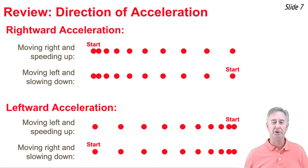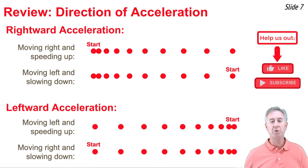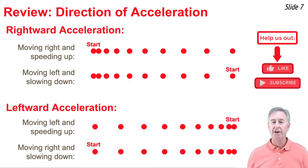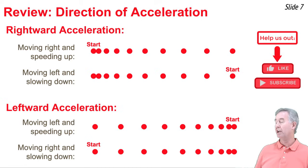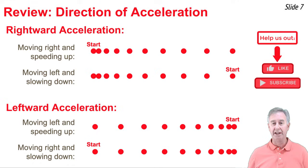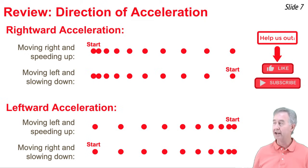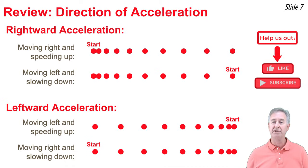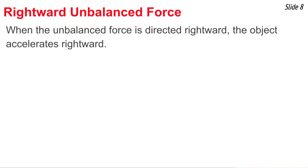In the kinematics series of our physics video tutorial, we learned about the direction of acceleration. There are two ways to accelerate rightward: the first is to move to the right and speed up — a rightward acceleration with a rightward velocity. The second is to move leftward and slow down — a rightward acceleration with a leftward velocity. Similarly, there are two ways to accelerate leftward: moving to the left and speeding up gives a leftward acceleration with a leftward velocity, and moving to the right and slowing down gives a leftward acceleration with a rightward velocity.